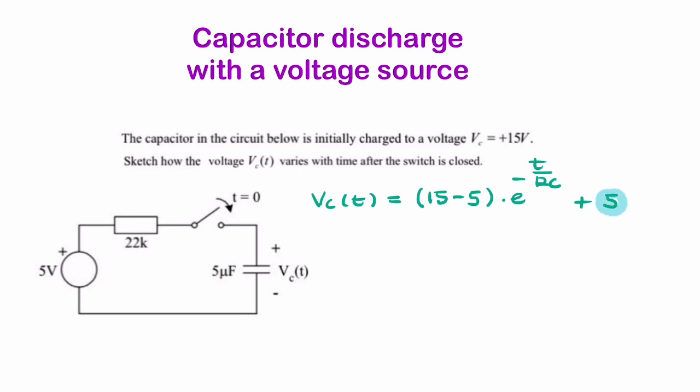So this 5 is this 5, and RC is your time constant, which is 22k times 5 micro. That gives you 110 milliseconds.